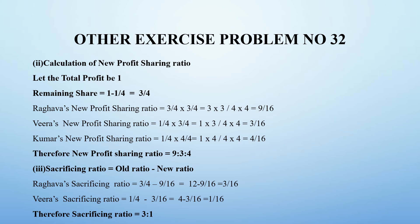Veera's new profit sharing ratio: old ratio is 1/4, multiplied by remaining share 3/4, so numerator 1×3 and denominator 4×4 gives 3 by 16. Kumar's new profit sharing ratio is 1/4. To get a common denominator of 16, we multiply by 4/4, giving numerator 4 and denominator 16, which is 4 by 16, reducible to 1 by 4. So the new profit sharing ratio is 9:3:4.